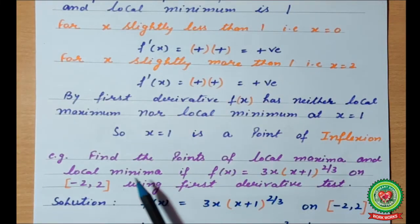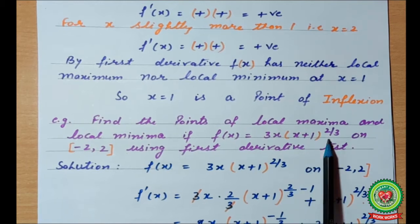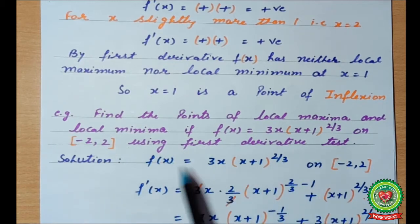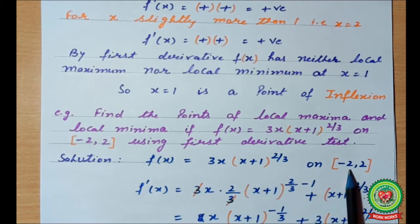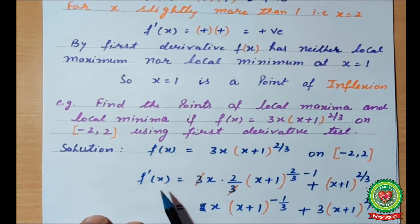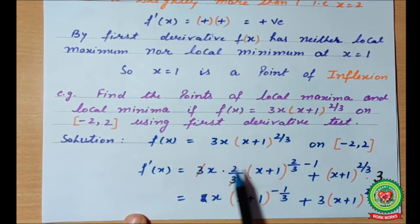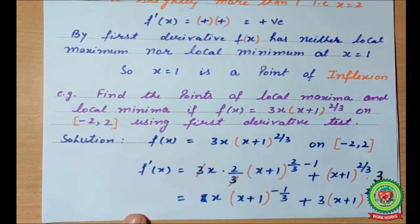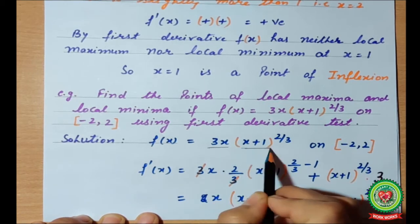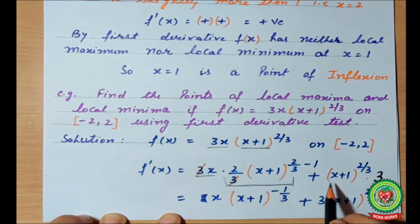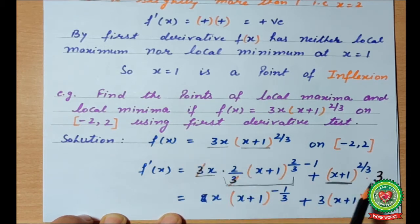Now I am taking one more example. Find the points of local maxima and local minima if f(x) = 3x·(x+1)^(2/3) on the closed interval [-2, 2], using the first derivative test. First we differentiate: f'(x) = (2/3)·3·2x·(x+1)^(2/3 - 1) — the 3s cancel — plus, because two functions are multiplied, the first function as-is times the differentiation of the second, plus the second function times the differentiation of the first, which is 3.